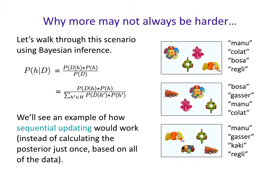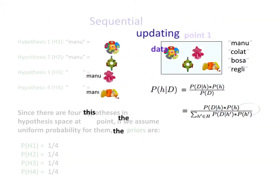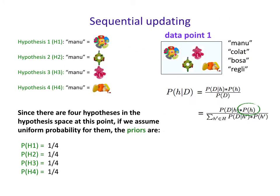Instead of calculating the posterior probability just once across all three scenes, we get it incrementally — we process one scene at a time. So here are hypotheses about what 'Manu' could refer to: it could refer to any one of objects one through four. Since there are four hypotheses and we have no reason to prefer one over another, we assume uniform probability, so the priors are just one-fourth — one of four possible options.